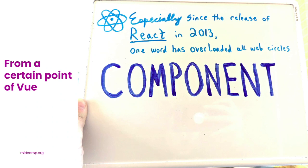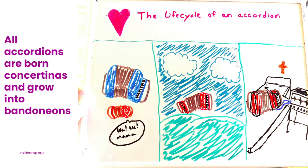As we explore my opinion of what is and isn't a component, we can all test our assumptions of what we think 'component' means and perhaps reflect on whether some of it is kind of gatekeeper-y. So let's explore how an accordion component is born and grows and lives.